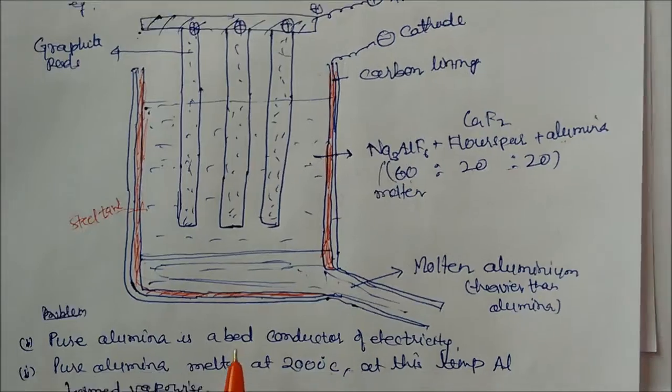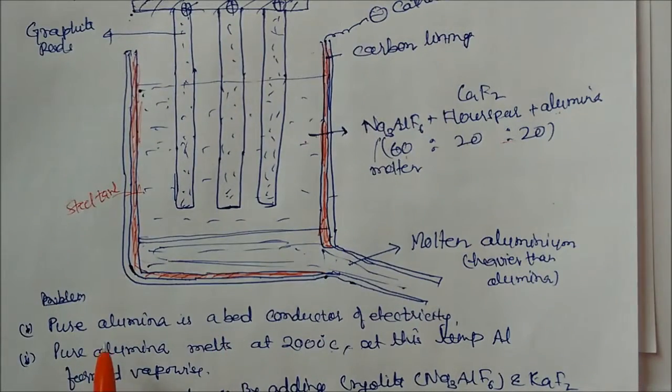Now, what are the problems? The problem is if you take pure alumina, pure alumina is a bad conductor of electricity. And pure alumina melts at 2000 degree centigrade. So if you increase the temperature up to 2000 degree centigrade, what will happen?